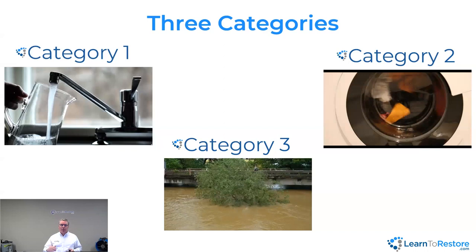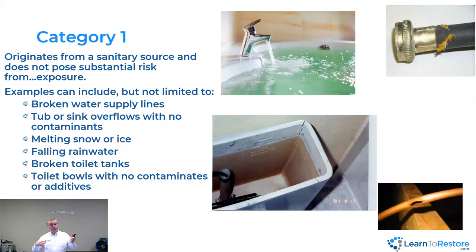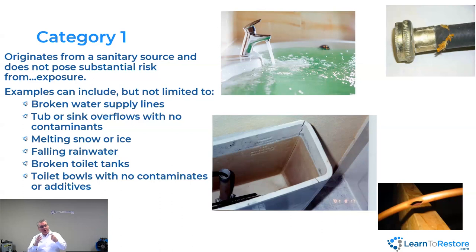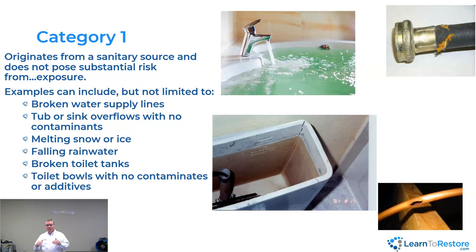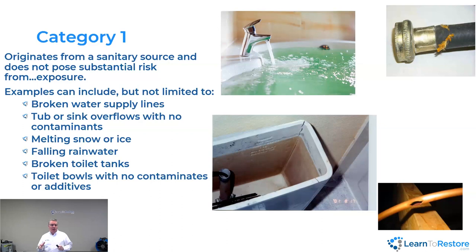The definitions per the S-500: Category one comes from a sanitary source — a clean water source. I want to point out the word there is 'source'; it starts out clean, came from a supply line. It does not pose substantial risk from exposure. There's a little more wording in the actual S-500; I've been very careful that my truncation has not in any way altered the meaning. Examples can include — and I want to point out, these are examples. Other people look at it and say these can be examples but not necessarily all-inclusive.